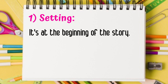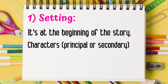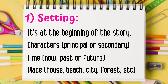Part number one is the setting. The setting is at the beginning of the story, and we can find characters, principal or secondary. We can also find the time — is the story happening now, in the past, or future? And finally, we can find the place. The story may happen in a house, on a beach, in a city, forest, or somewhere else.